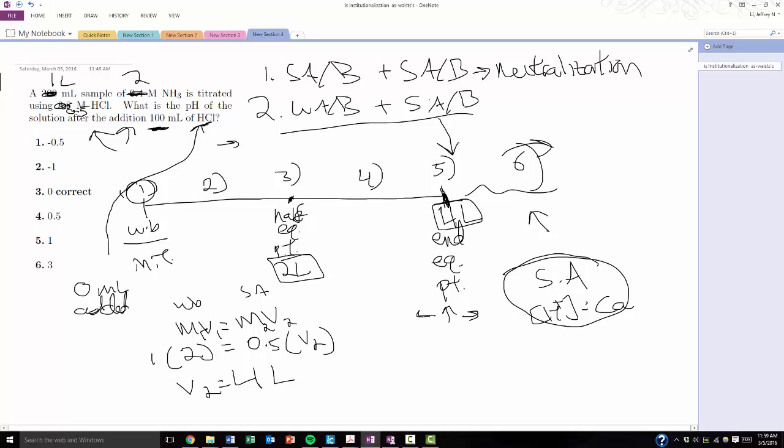Which means the half equivalence point is going to be when I add two liters of the acid in. And that means if the question is asking me for between zero and two, I know I'm at range two. If I'm between two and four, I'm going to be in range four. And if it's adding more than four liters, I'm going to be all the way in range six.